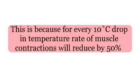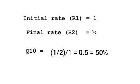It is because for every 10°C drop in temperature, the rate of muscle contraction will reduce by 50%. Let the initial rate be 1 and the final rate be 0.5. So Q10 is equal to 0.5 divided by 1, that is 0.5.